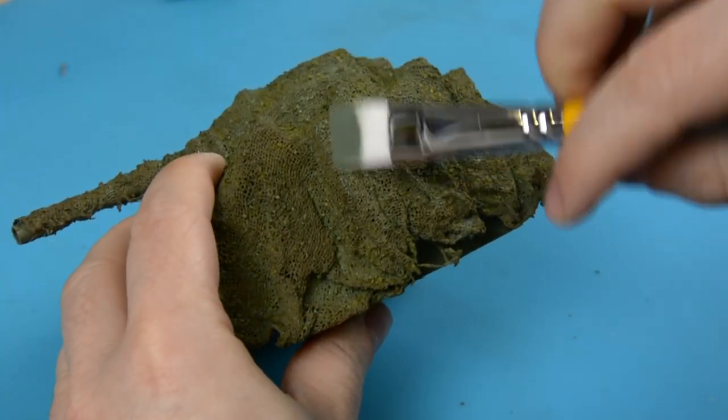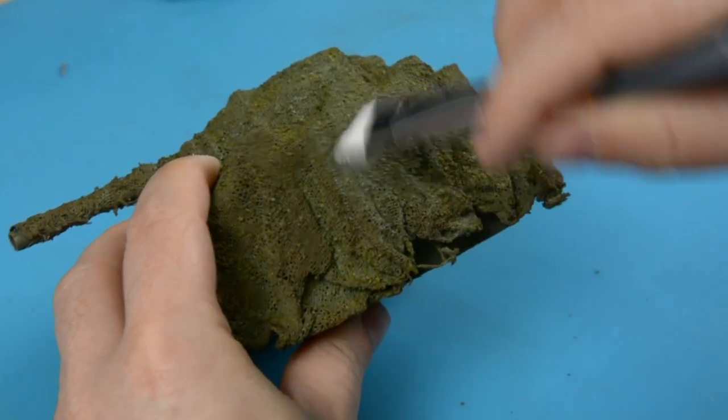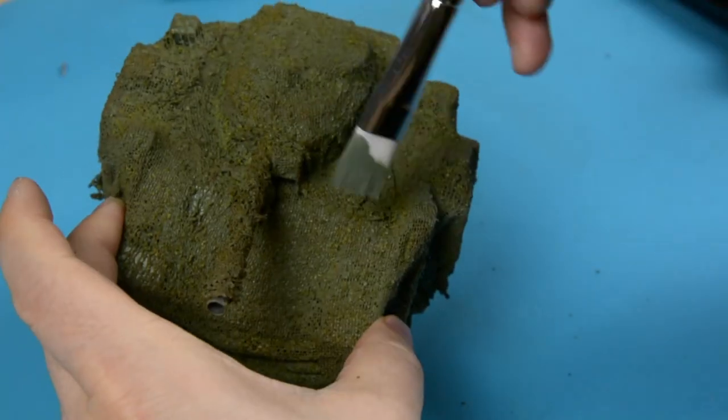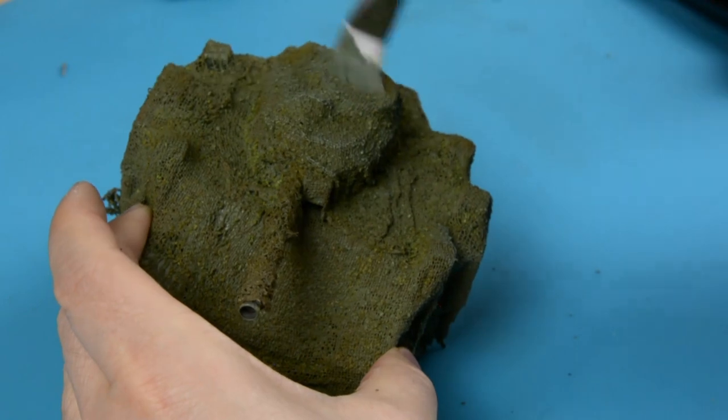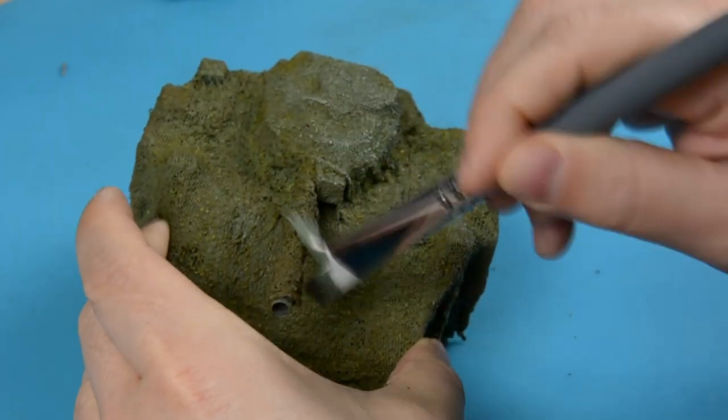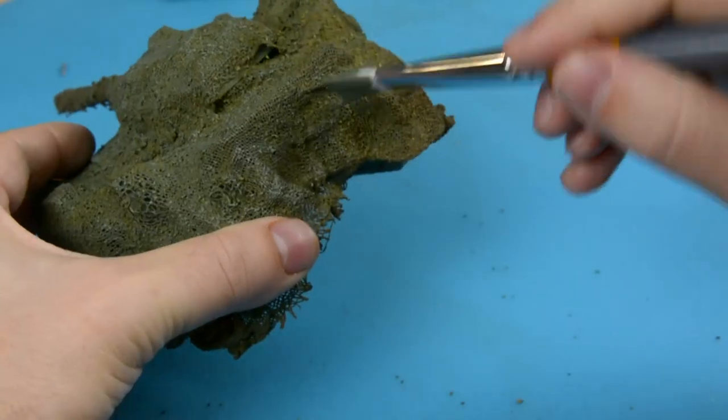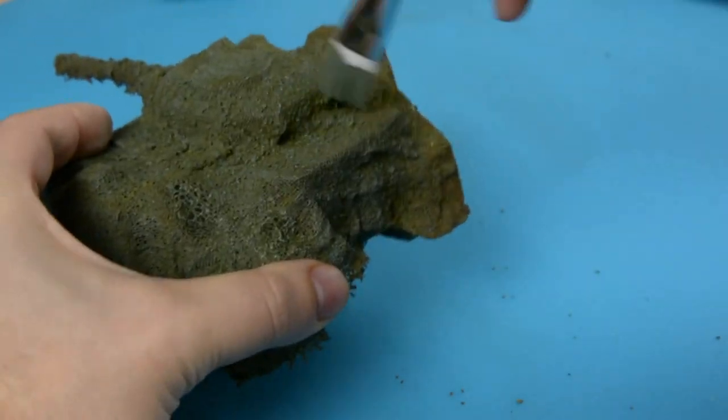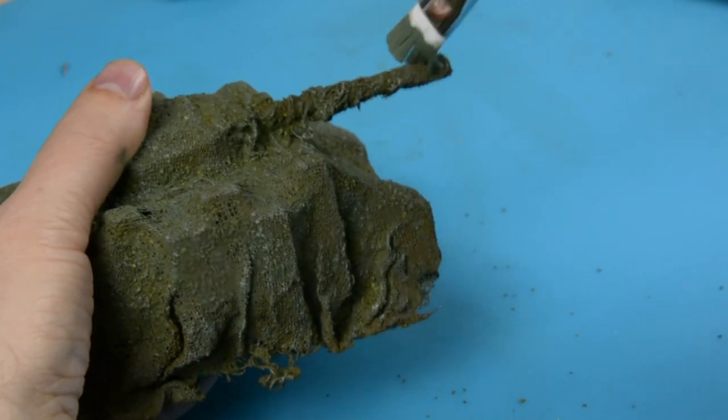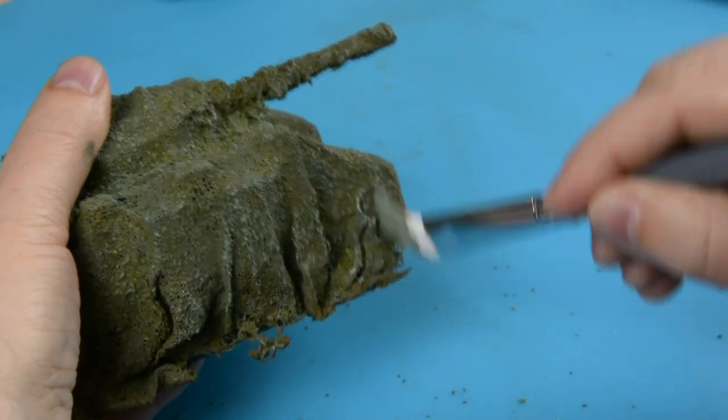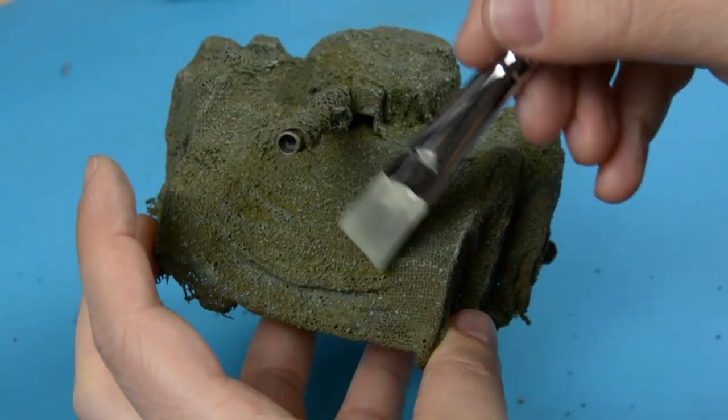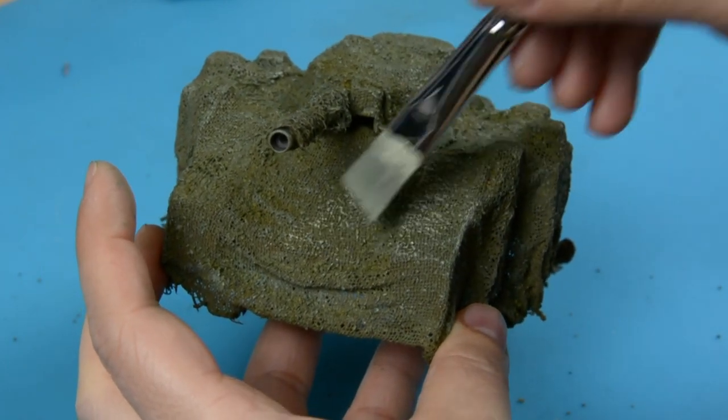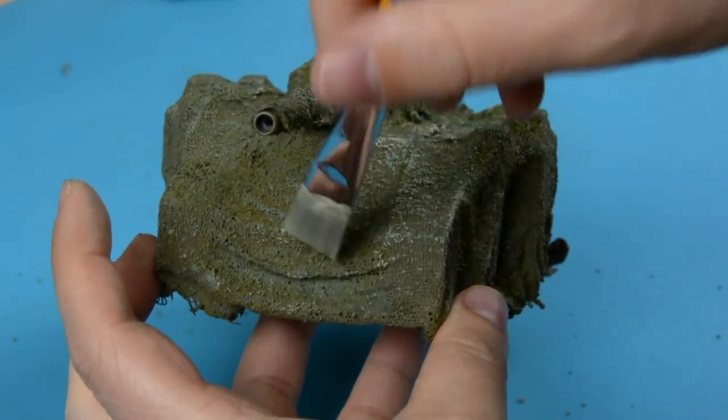Once the wash is dry, I'll give the tank a dry brush with the original green color that I used. Then I'll mix that original color with some white and give it an even lighter dry brush.